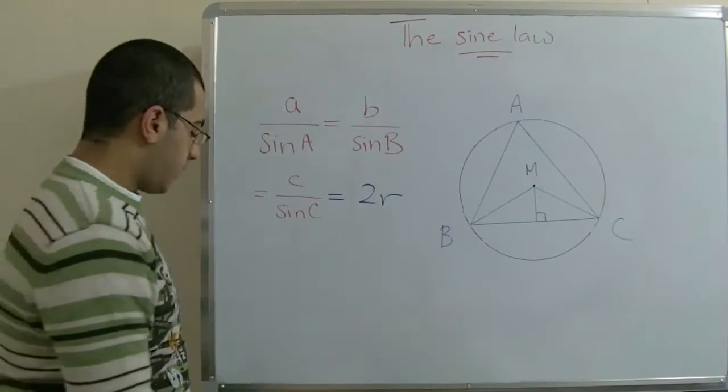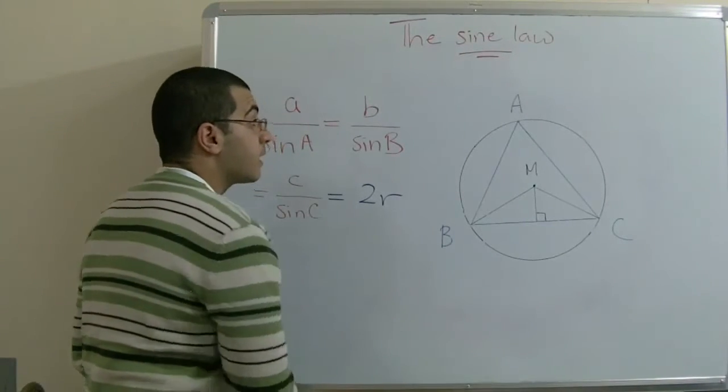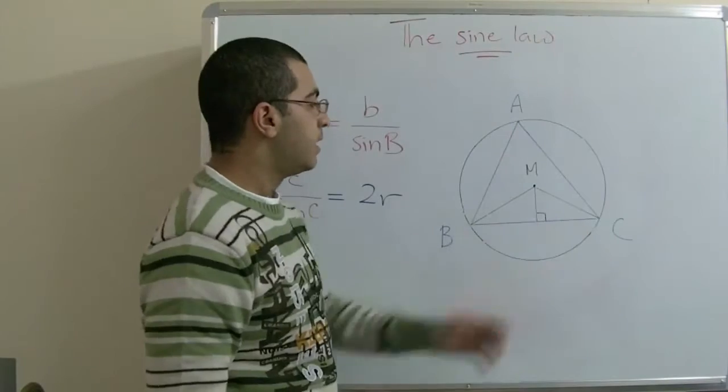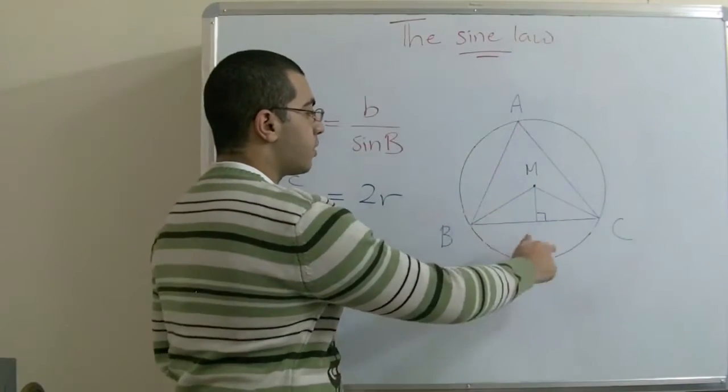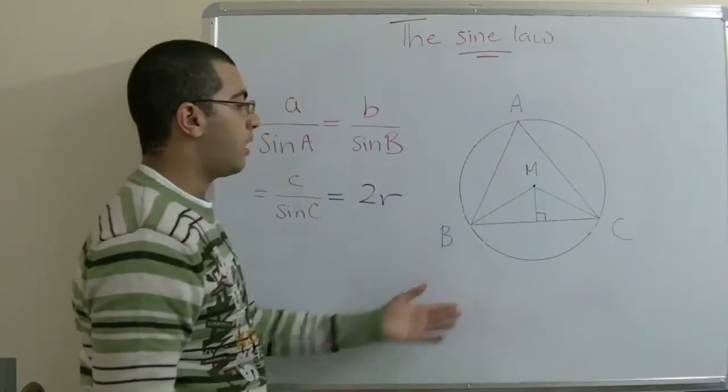In the opposite figure we can see that this is triangle ABC and circle M is the circumcircle of the triangle.